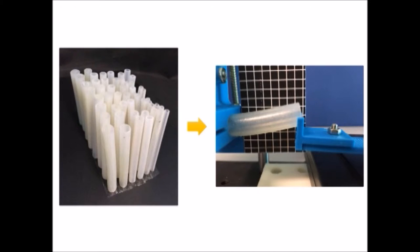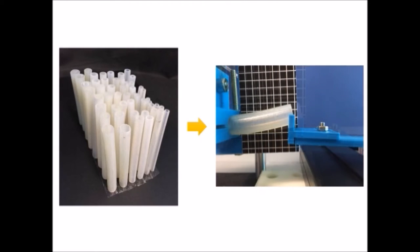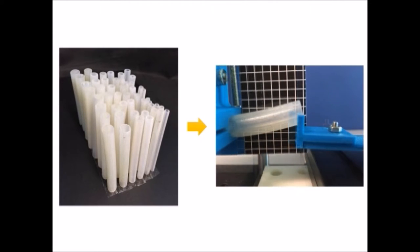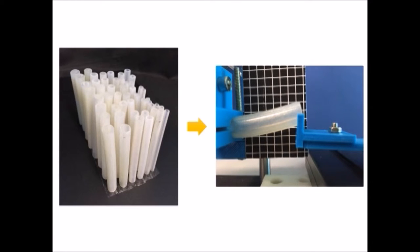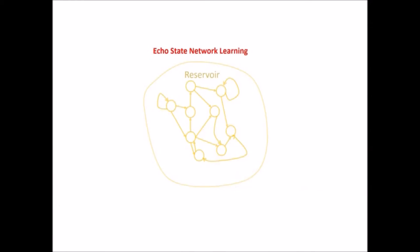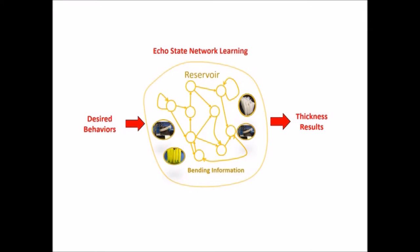We use a data-driven framework to find a relationship between bending elasticity, shell thickness, and the dimension of cross-sections. In our method, we put the tested bending information in a reservoir, then for any desired behavior given as input, the echo state network will output the thickness results automatically.